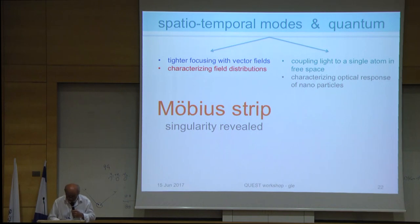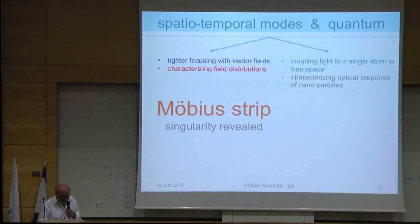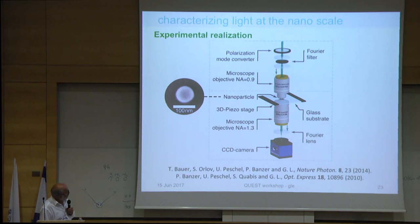The next topic is the Möbius strip. This project has nothing to do with any quantum excitation. This is kind of looking at the special vector properties of the light field only. It's characterizing the field distribution in a way with a kind of revealing a hidden singularity. The experiment looks similar. A collimating microscope objective, large numerical aperture 0.9, collecting objective and a camera. The bead again, this is a gold bead of 80 nanometer diameter.